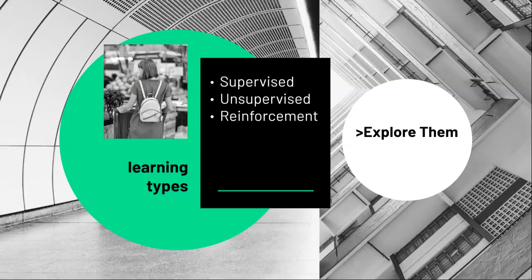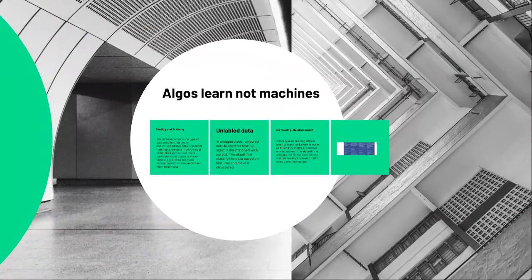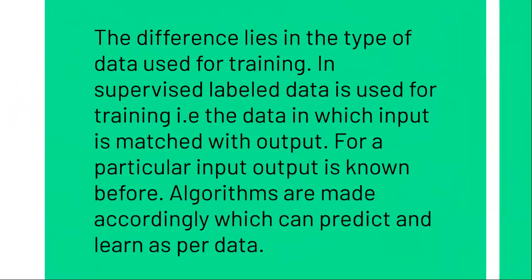We have already seen what supervised learning is — it is where we have labeled data. There are two important things: training and testing. In supervised learning, the data used for training is labeled data, meaning input is matched with an output. For a particular input, the output is known before algorithms are made, so they can predict and learn as per the data. The matching between input and output is the supervision in supervised learning.